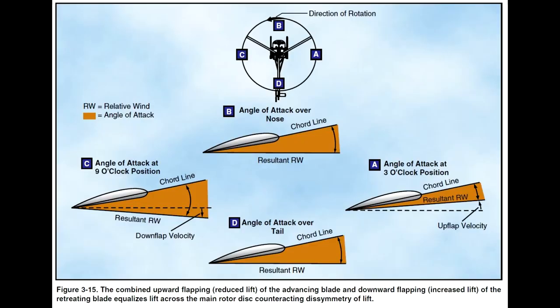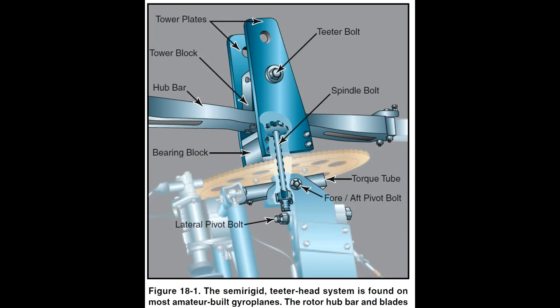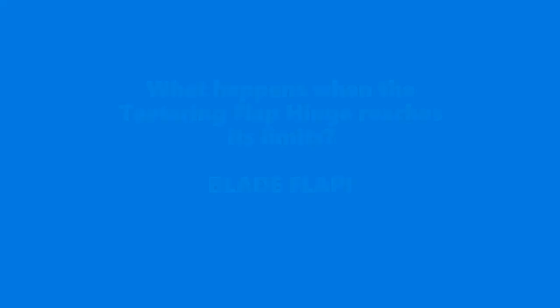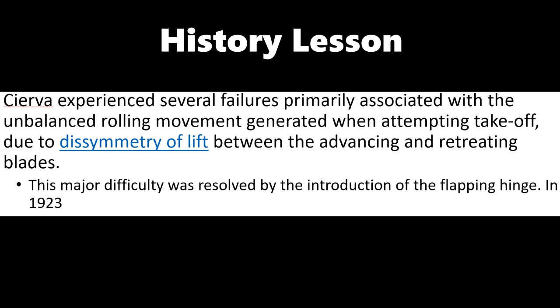This diagram shows how the angle of attack changes as the blade rotates. You can see in position A the angle of attack is less than it is in position C as the blade is descending. For flap hinges, modern gyroplanes use a rigid blade and a teetering head. When that teetering rotor head hits its limits, it acts like a rigid rotor and you experience blade flap.